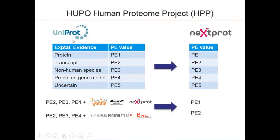To do so, we consider the protein existence value in UniProt, where experimental evidence at the protein level is PE1, evidence at the transcript level is PE2, PE3 when there's evidence coming from a species other than human, PE4 when the evidence comes from a gene model, and PE5 means it's rather uncertain whether the protein exists. At NEXTProt, we use exactly the same PE value scale as UniProt and apply the same rules to assign these values.